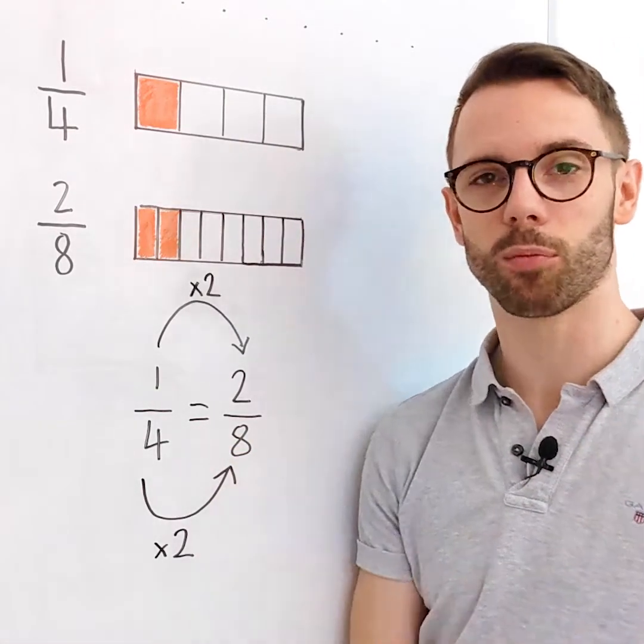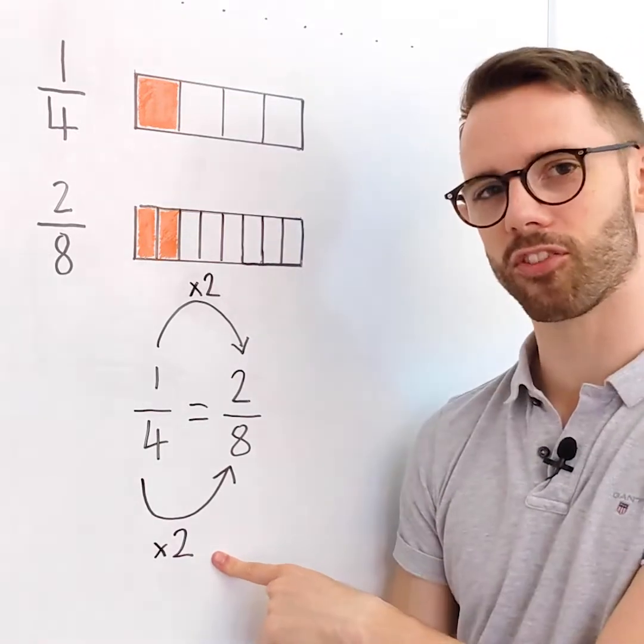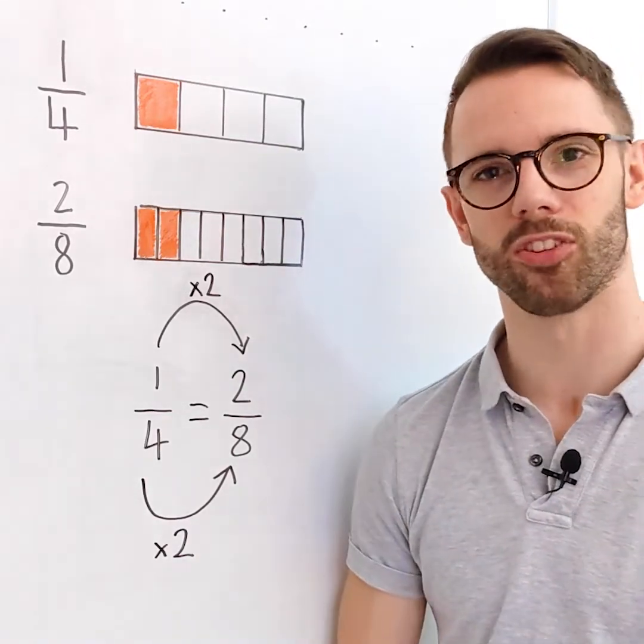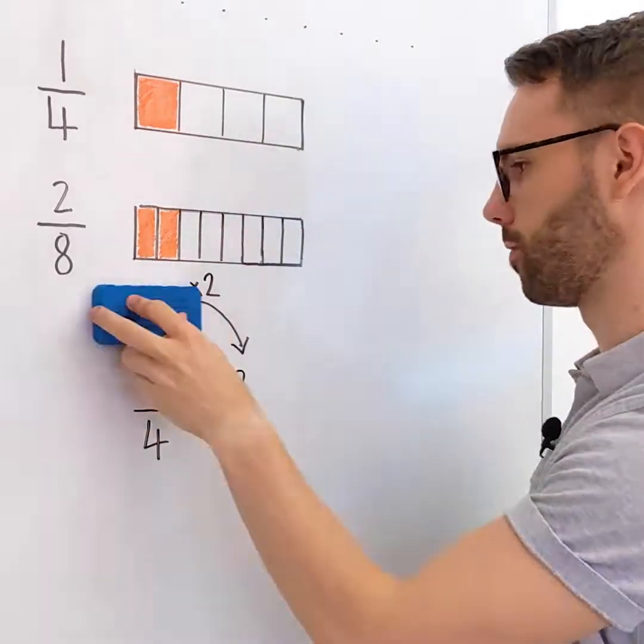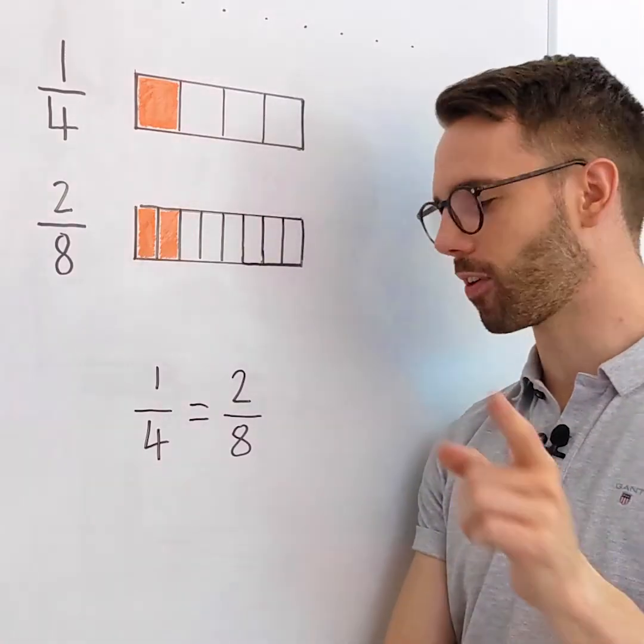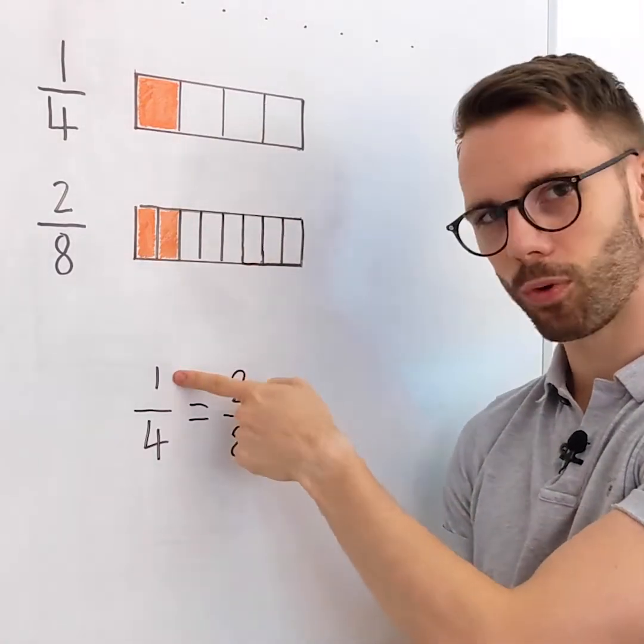Now instead of just leaving it there, we can double check it. We use multiplication, so I'm going to use the inverse operation division to check. Using division, how can I turn my numerator two into the number one?